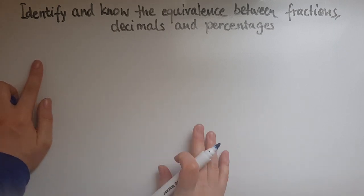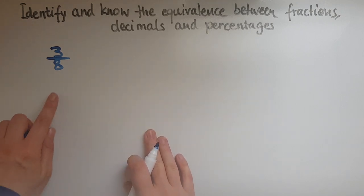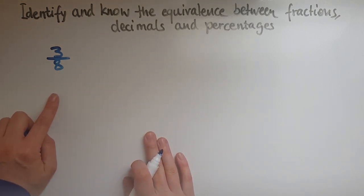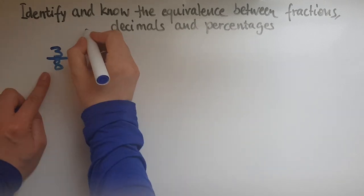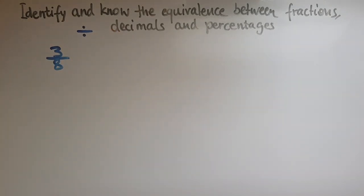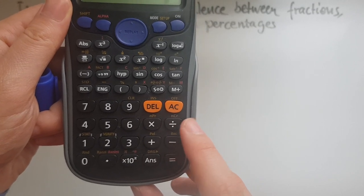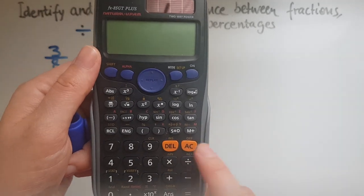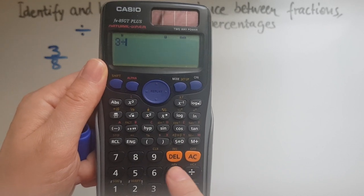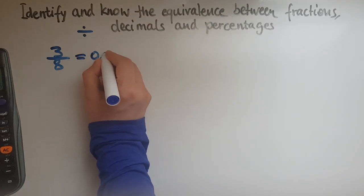Starting with fractions — let's say I have three eighths and I want to convert it to a decimal or a percentage. To convert it to a decimal, all I have to do is three divided by eight. That line in the middle of a fraction means division, just like the division sign on a calculator — the number on top divided by the number on the bottom. So three divided by eight equals 0.375.